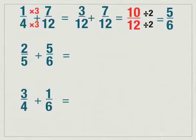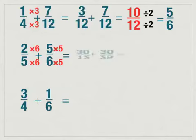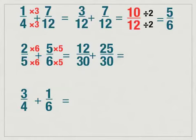What do you do to five to get thirty? You multiply by six. So we need to multiply both the top and the bottom of two-fifths by six to get a denominator of thirty. Now ask yourself, what do you do to six to get thirty? The answer would be multiply by five. So now I have to multiply by five on top and bottom of five-sixths. When you multiply, you get twelve over thirty plus twenty-five over thirty. Remember, the denominator stays the same. When you add your numerators, you get thirty-seven over thirty.